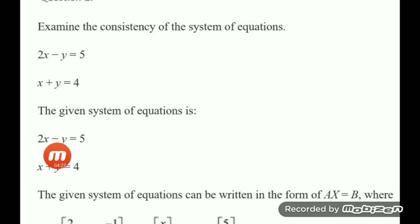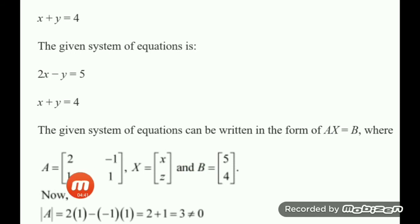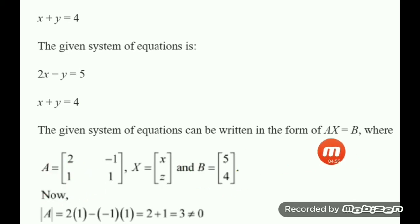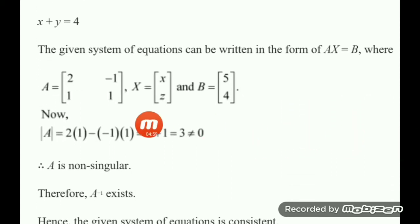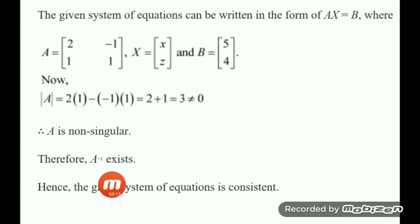The coefficient matrix A has first row 2, minus 1 and second row 1, 1. The variables are x and y, and the constants are 5 and 4. The determinant of A equals 2 into 1 minus 1 into minus 1, which is 2 plus 1 equals 3, not equal to zero. Since A is non-singular, A inverse exists and the system of equations is consistent.